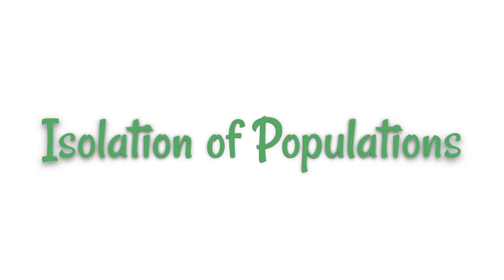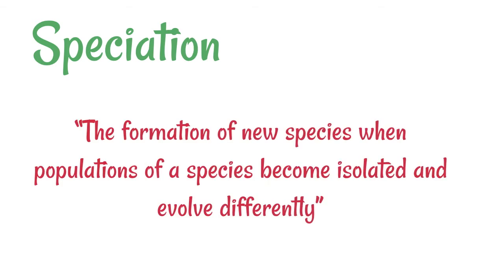This is about how the isolation of populations can result in speciation. Speciation is the formation of new species when populations of a species become isolated and evolve differently. To understand this, I'm assuming you understand the mechanism of natural selection.